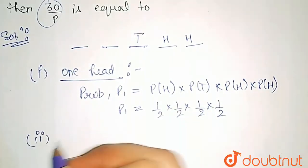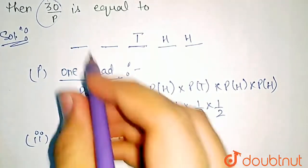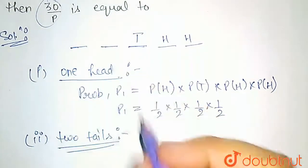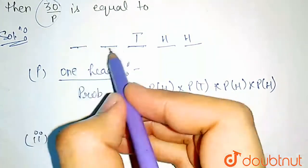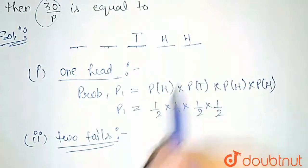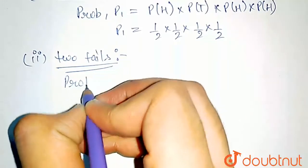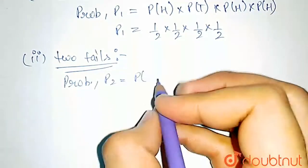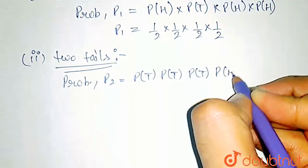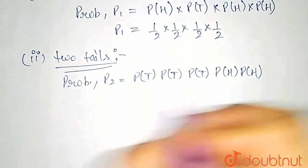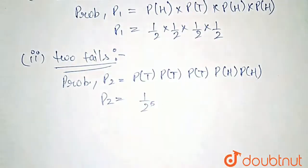In the second case, for the first two positions, there would be two tails. So we need the probability of tail, tail, tail, head, head — that is, not head, not head, tail, and then head and head. The probability P2 is equal to probability of tail into probability of tail into probability of tail into probability of head into probability of head, which is half raised to the power 5.